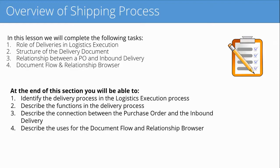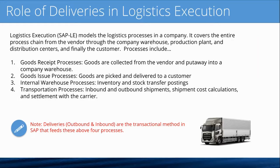We'll cover the role of deliveries in logistics execution, the structure of the delivery document itself, the relationship between a PO and an inbound delivery, and two standard SAP features for delivery documents: the document flow and the relationship browser. At the end of this section you should be able to identify the delivery process, describe the functions in the delivery process, describe the connection between a purchase order and an inbound delivery, and describe the uses for the document flow and relationship browser.